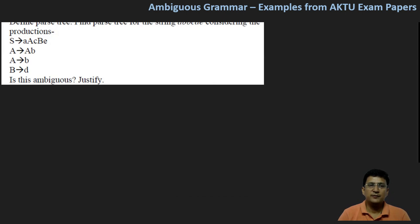This is about defining parse tree, finding parse tree for the string. So there is a string given and the production is also given, and accordingly we have to see if this grammar is ambiguous or not.